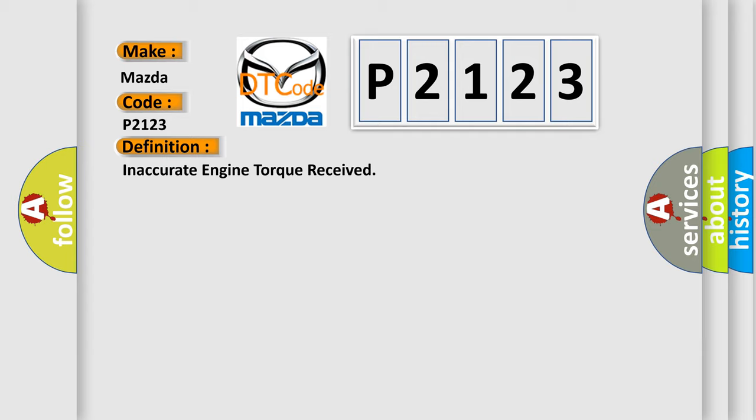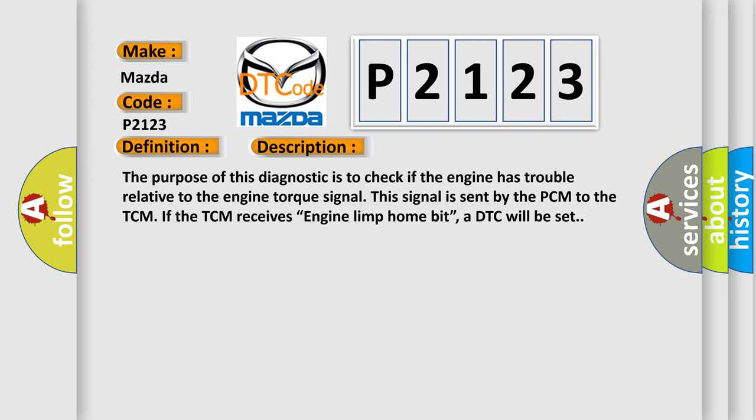And now this is a short description of this DTC code. The purpose of this diagnostic is to check if the engine has trouble relative to the engine torque signal. This signal is sent by the PCM to the TCM. If the TCM receives engine limp home bit, a DTC will be set.